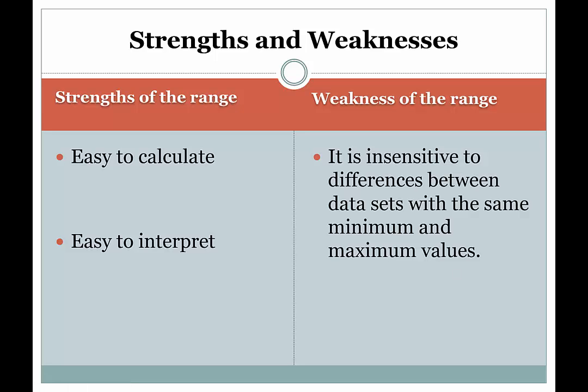Well, basically it's insensitive to differences between datasets with the same minimum and maximum values. What it means to say that the range is insensitive is to say that two datasets, or for that matter, several datasets could have very different spreads or very different dispersions, yet they would have very similar or the same minimum and maximum values. We wouldn't want to label all of those different datasets as the same, just because they have the same minimum and maximum values.